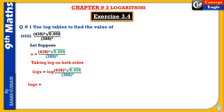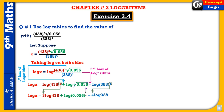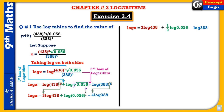We apply the logarithm laws. The first law changes the denominator term to positive (by converting division to subtraction). The second law converts the denominator terms to minus. Since powers are present, the third law moves exponents as coefficients: 3 log 438, plus (1/2) log 0.056, minus 4 log 388.